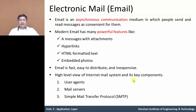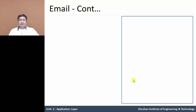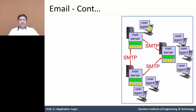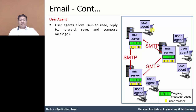Let us understand in detail. In this figure, the user agent means our local machine. The user agent allows the user to read, reply, forward, save, and compose messages. For example, Microsoft Outlook, Apple Mail, and Mozilla Thunderbird, which is a recent development application.